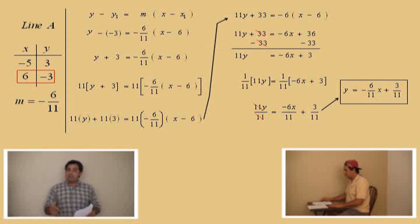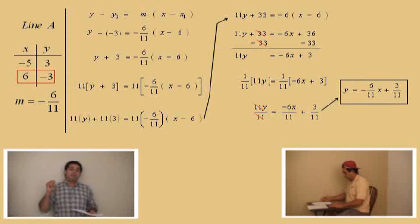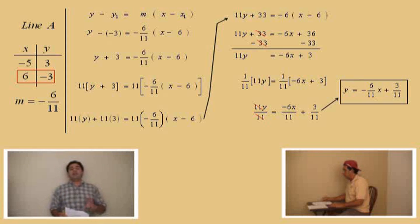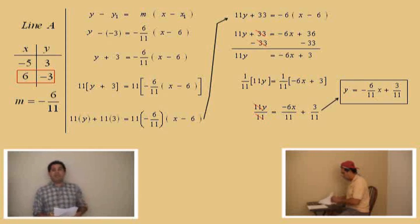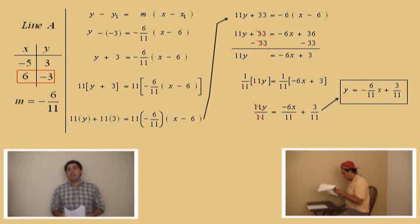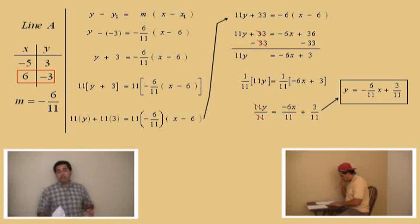The first way we used the slope-intercept formula y equals mx plus b, plugged in our point and slope, found the b value, and wrote out our equation. In the second approach, we used the point-slope formula, used the point six comma negative three, plugged in x1 and y1 and the slope, and then solved for y. It's up to you how you want to approach this problem.